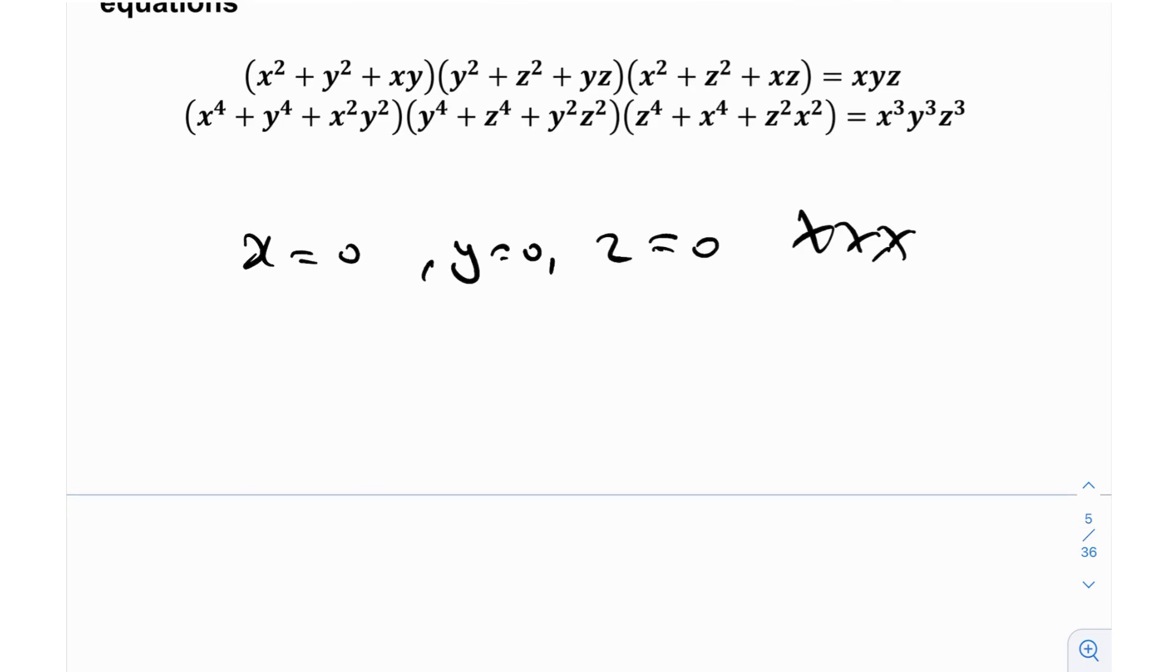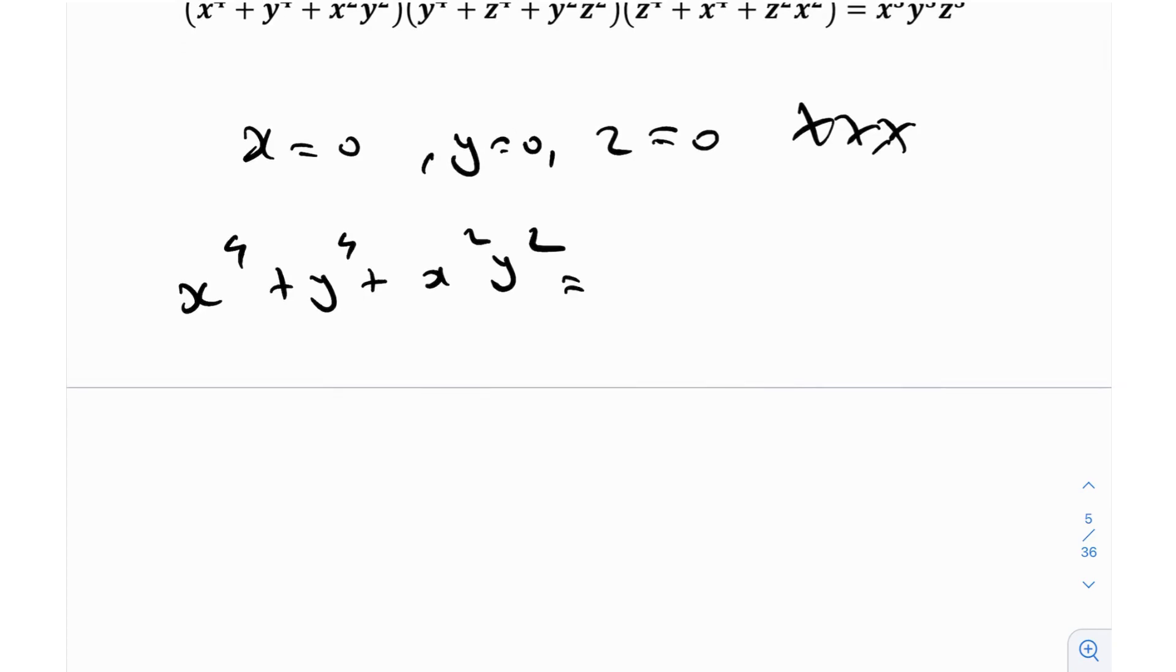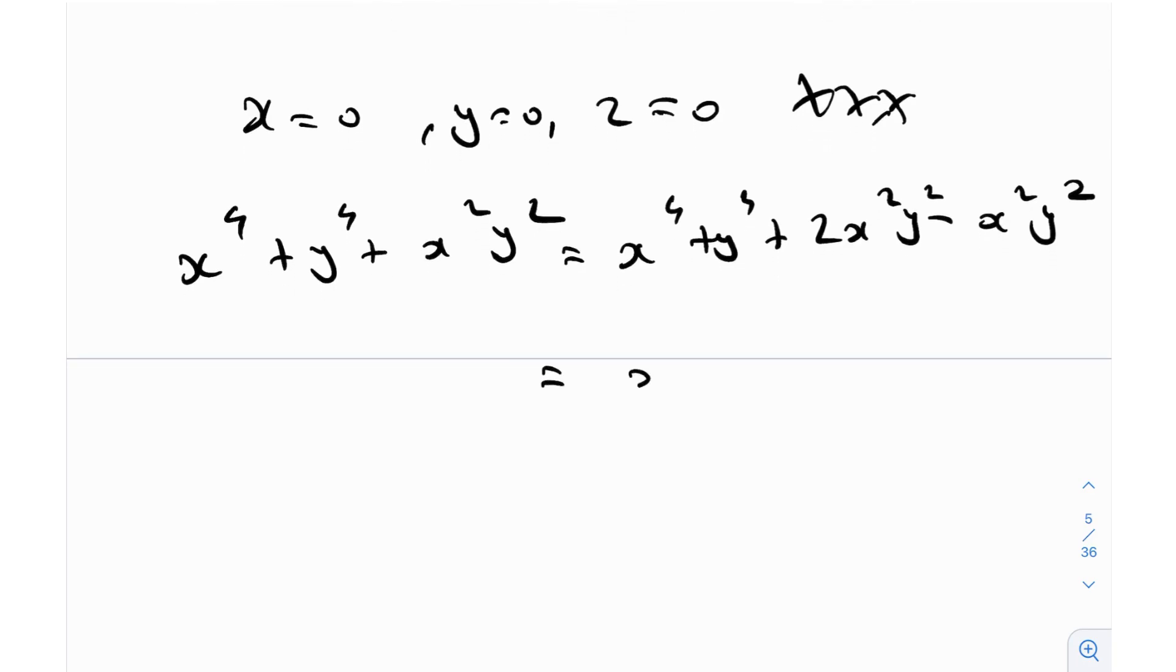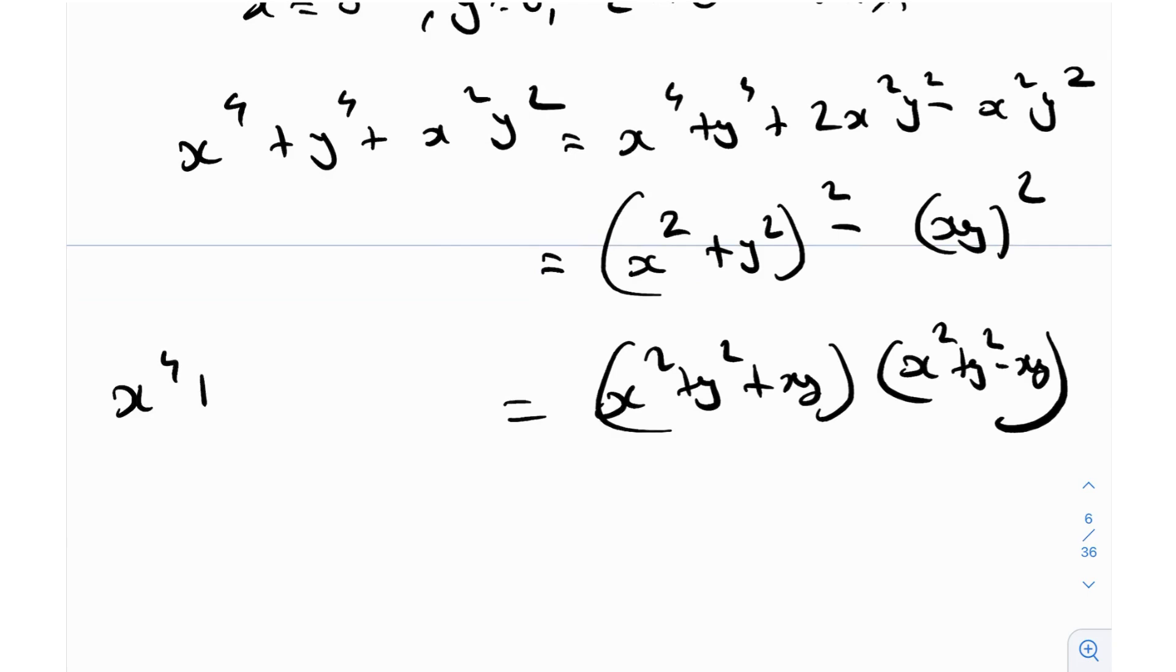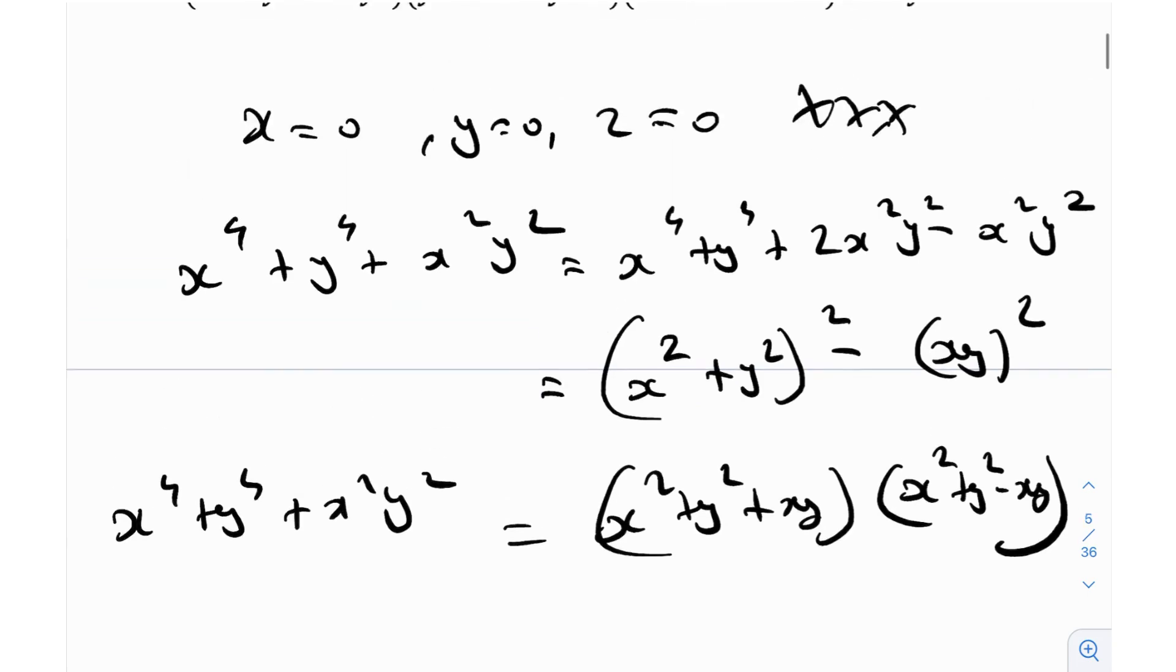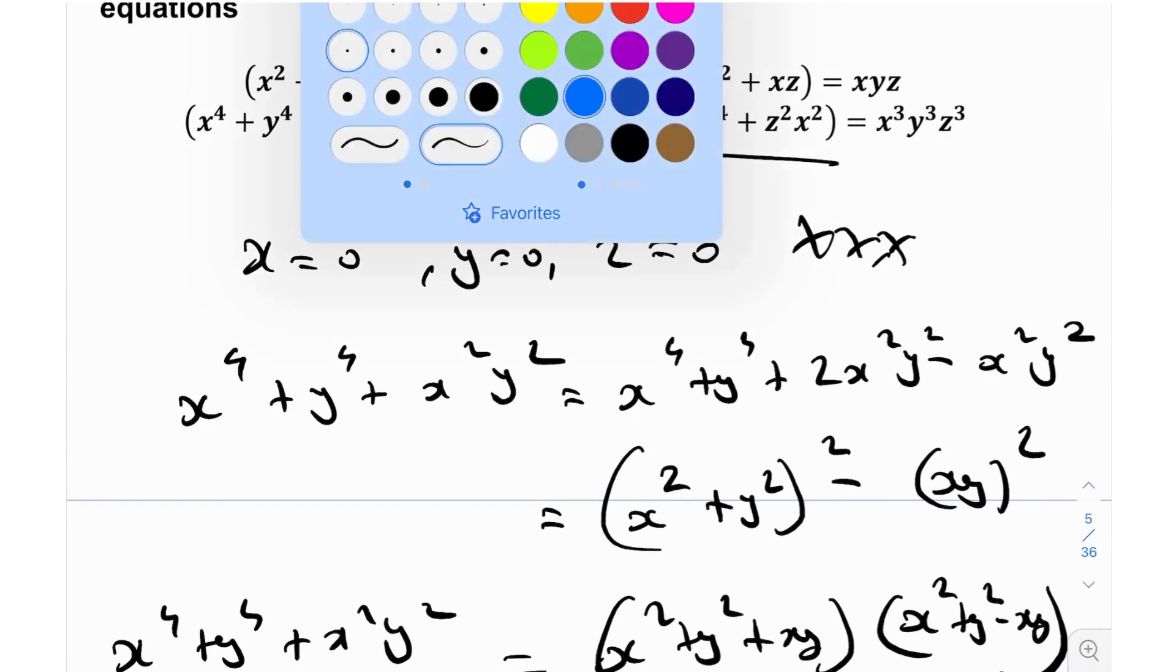Now then, if you actually notice this, x to the power 4 plus y to the power 4 plus x squared y squared, can I kind of manipulate this in order to factorize this? And the answer is actually yes. I can write this as x to the power 4 plus y to the power 4 plus 2x squared y squared minus x squared y squared. So really what I'm doing is I'm just adding an x squared y squared and subtracting an x squared y squared. And this can be very easily factorized. So this just becomes x squared plus y squared whole squared minus xy whole squared. And now you can just factorize this as x squared plus y squared plus xy times x squared plus y squared minus xy. And this is very fascinating because you can form similar factorizations for this and for this as well, which is very cool.